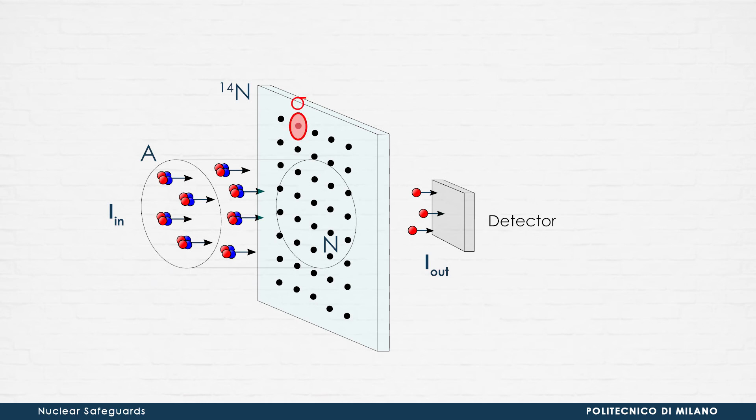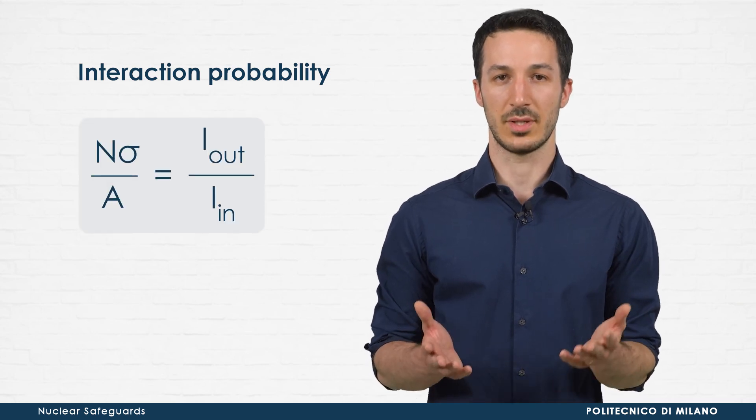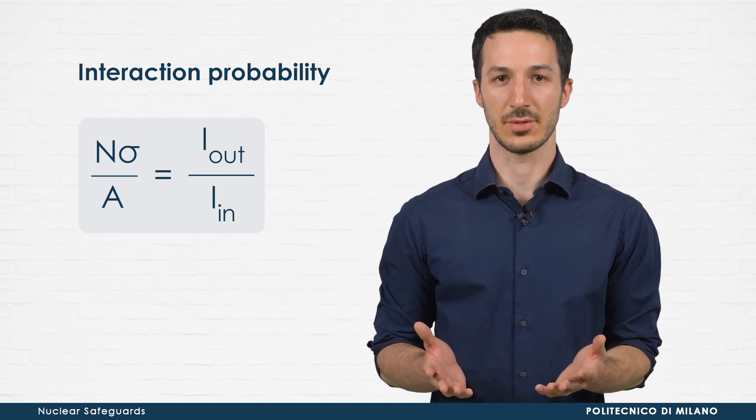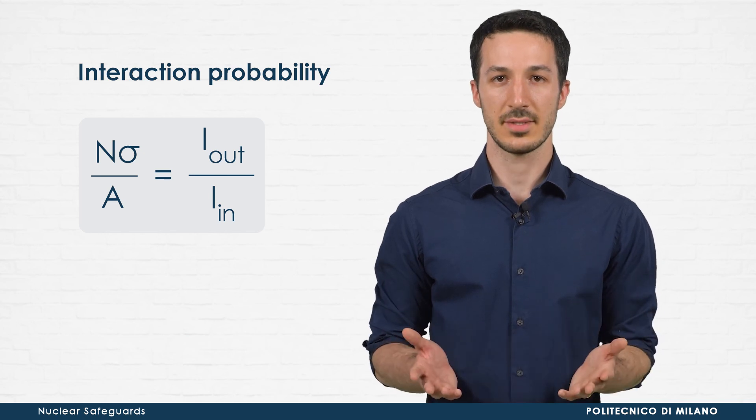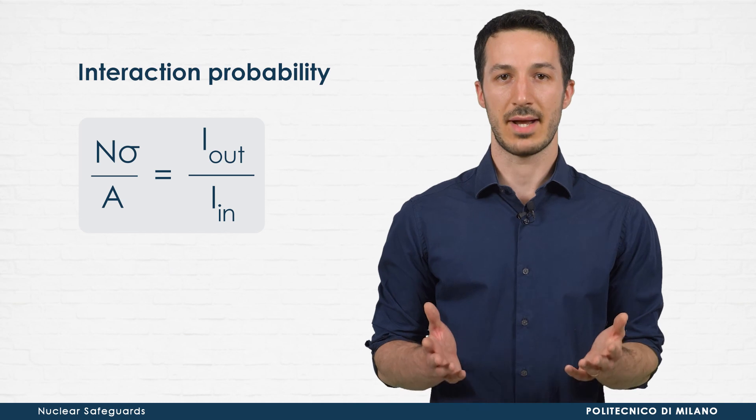The reaction cross-section, sigma, corresponds to the effective area offered by each target nucleus to the incident particle. Therefore, N nuclei interested by the incident beam of alpha particles offer a total effective area equal to N sigma. This quantity, when compared to the total area A covered by the beam, identifies a fraction between 0 and 1, having the physical meaning of an interaction probability. In other words, this interaction probability corresponds to the ratio between currents of the protons produced by the reaction and of alpha particles delivered to the target. These currents are measured during the experiment. Therefore, from the ratio of N over A, you can derive the reaction cross-section.